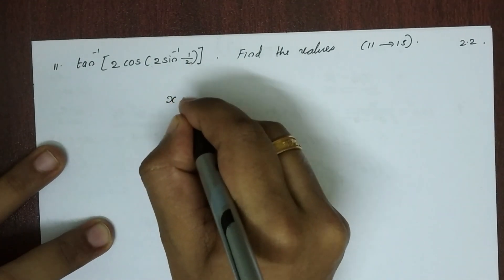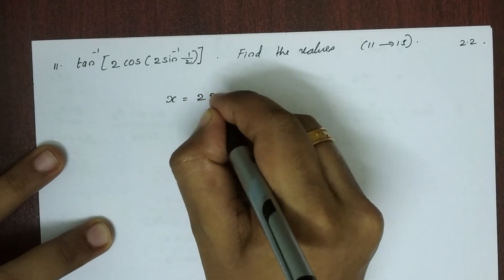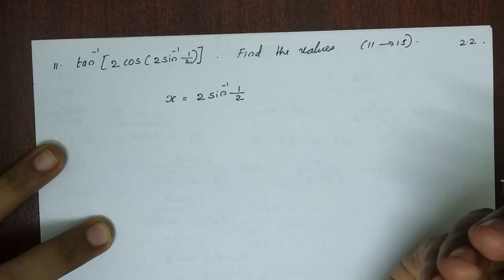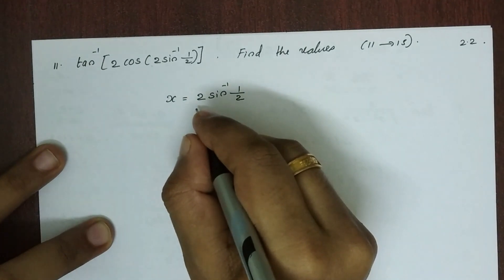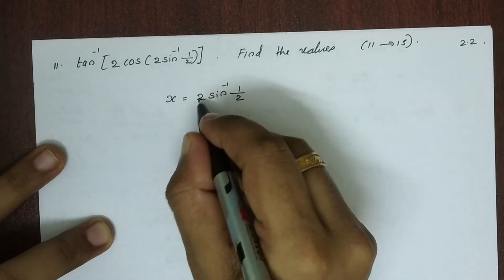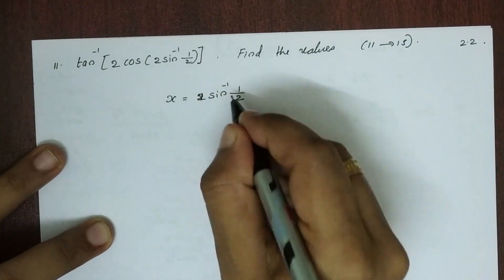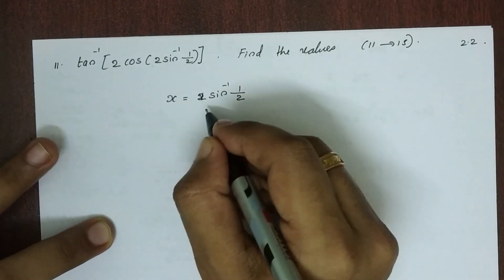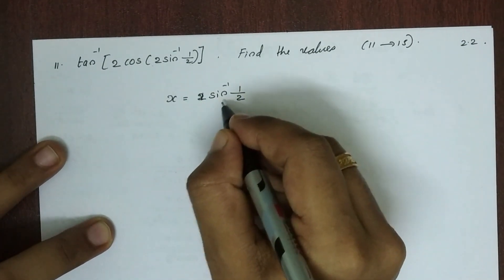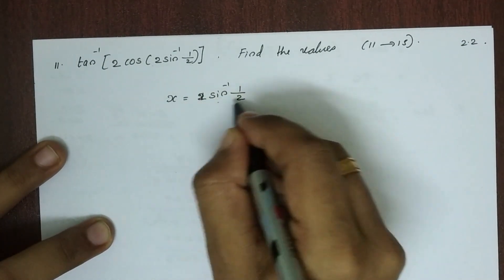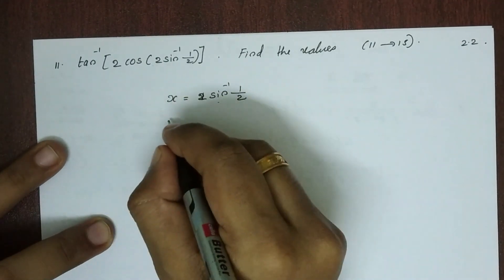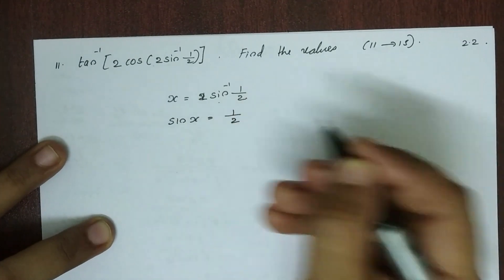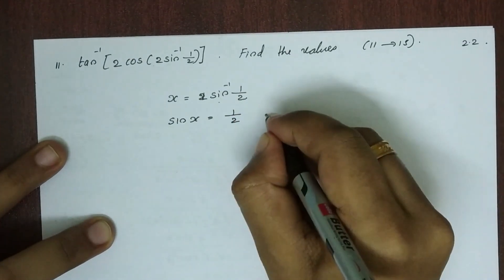Let x be equal to 2 sin inverse 1 by 2. Then x by 2 is equal to sin inverse 1 by 2, which means sin of x by 2 is equal to 1 by 2.